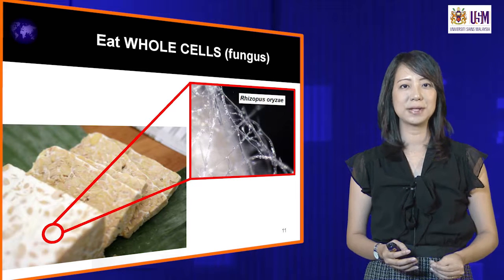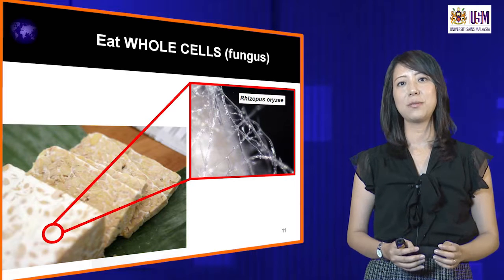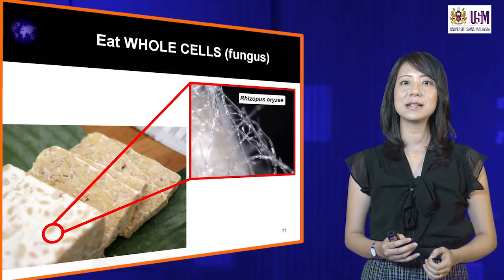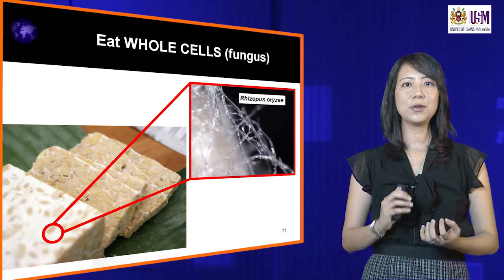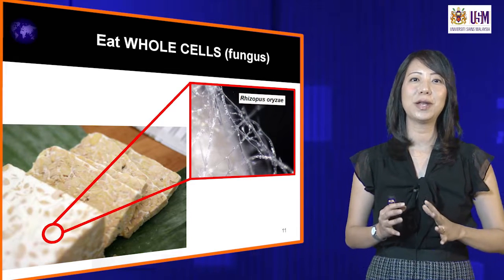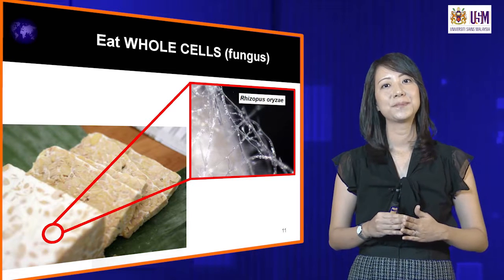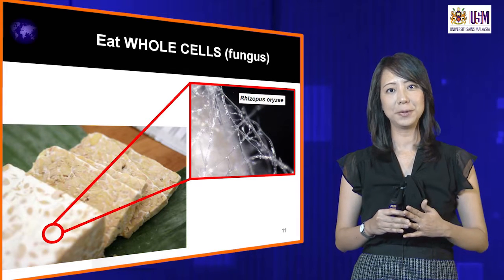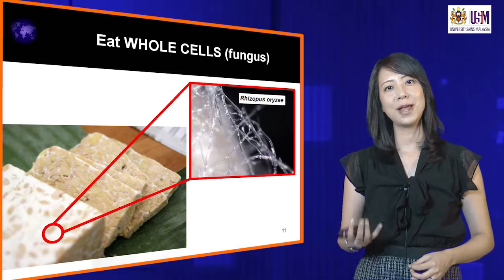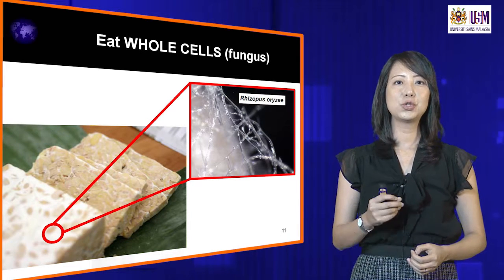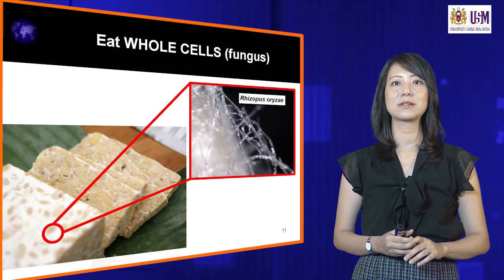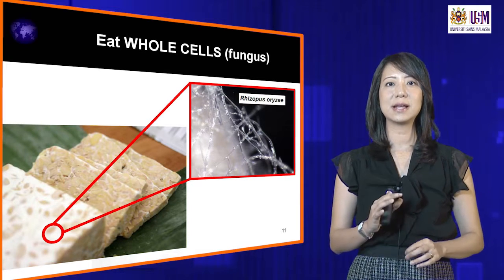Tempeh is basically fermented soybeans. If we look at a photo, it looks very different from the soybean we know, because the soybean has been fermented and utilized by a fungus — in this case, Rhizopus. Rhizopus has actually utilized the soybean as its food and grown on it, changing the structure of the soybean. Not just that, the taste, the aroma, and a lot of its organoleptic properties have also been changed. This is the beauty of fermented foods — we actually like the fermented aroma, fermented flavor, and fermented organoleptic properties. If we zoom in on the white cotton structure of tempeh, it is actually cells of the fungus Rhizopus.